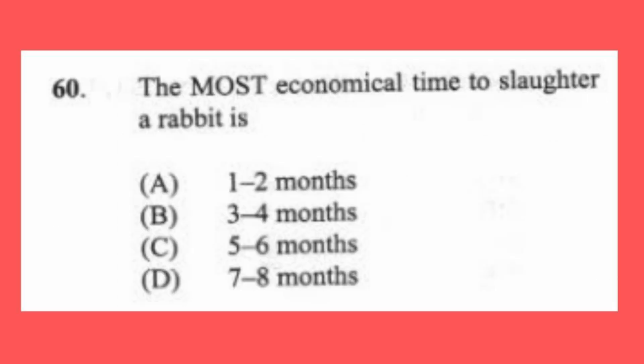Question 60: The most economical time to slaughter a rabbit is (a) one to two months, (b) three to four months, (c) five to six months, (d) seven to eight months. The answer is B, three to four months.